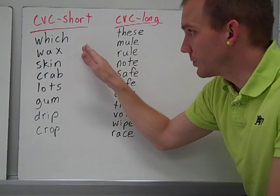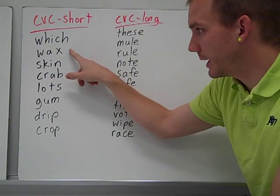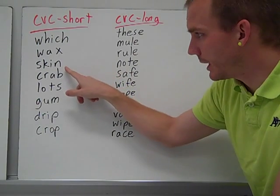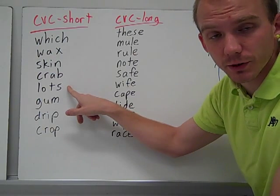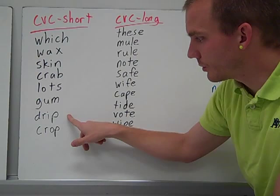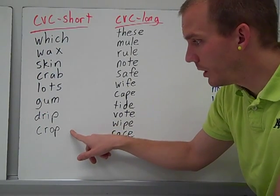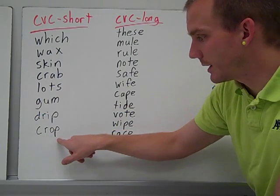Let's take a look at our short sounds. Witch, short I. Wax, short A. Skin, short I. Crab, short A. Lots, that's a short O there. Gum, short U. Drip, short I. And crop, short O. Remember, you figure out your short vowel sound, you put it there, and you have a consonant on either side.